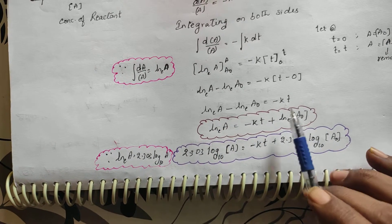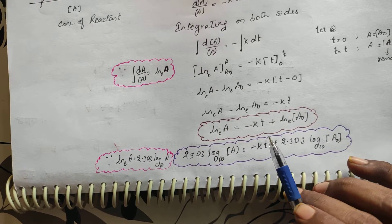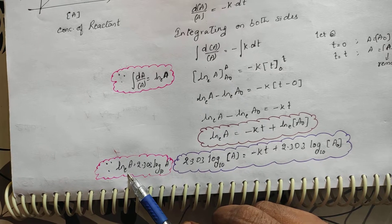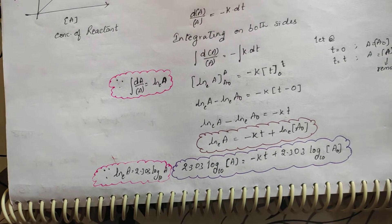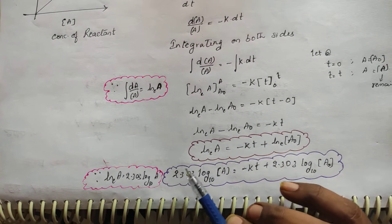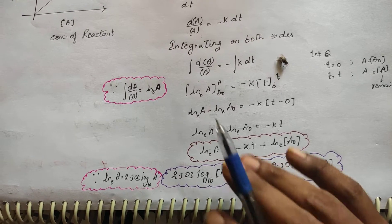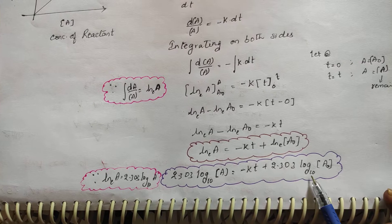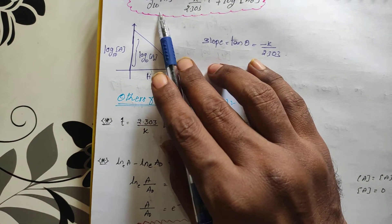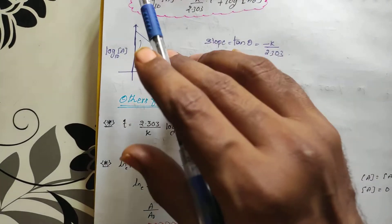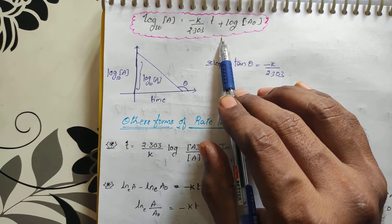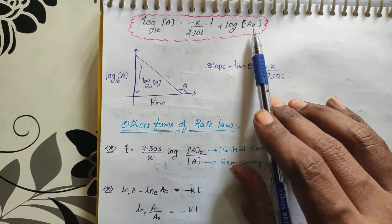Rearranging, we get ln[A] = ln[A₀] − Kt. Remembering that one natural log (ln base e) equals 2.303 log base 10, we can substitute to get: log₁₀[A] = −(K/2.303)·t + log₁₀[A₀].